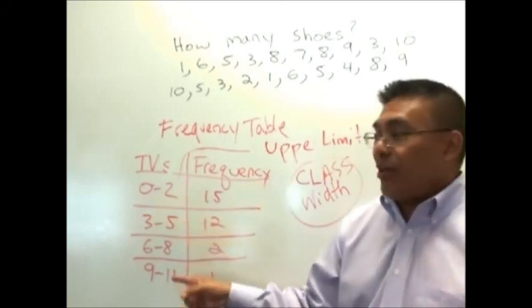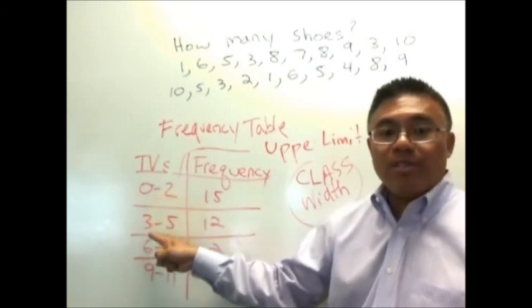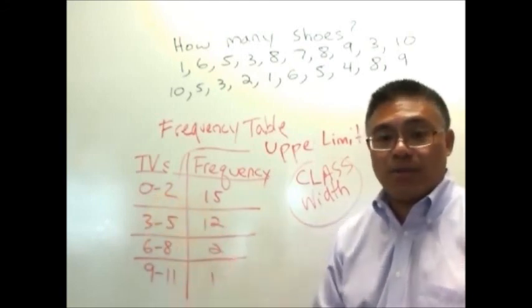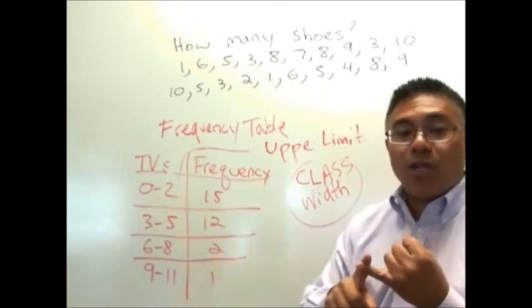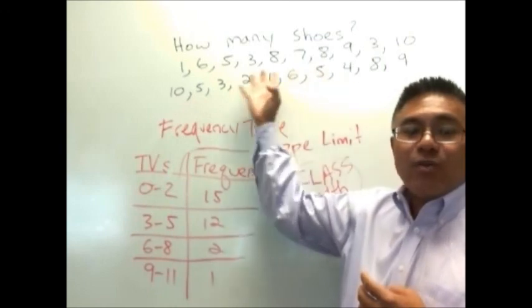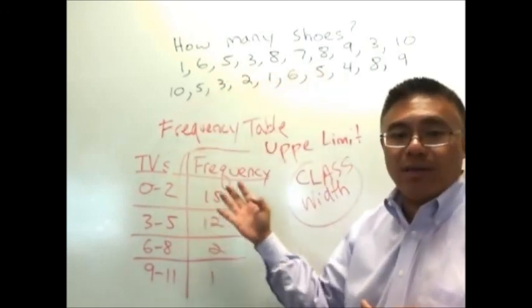I'd rather you don't think of it that way, though. I'd rather you think of it in terms of the lower limits, and whatever that difference is between the lower limits, that's your class width, okay? So now we know a lower limit, upper limit, and class width, and that's enough to get us started in rearranging this into a table.